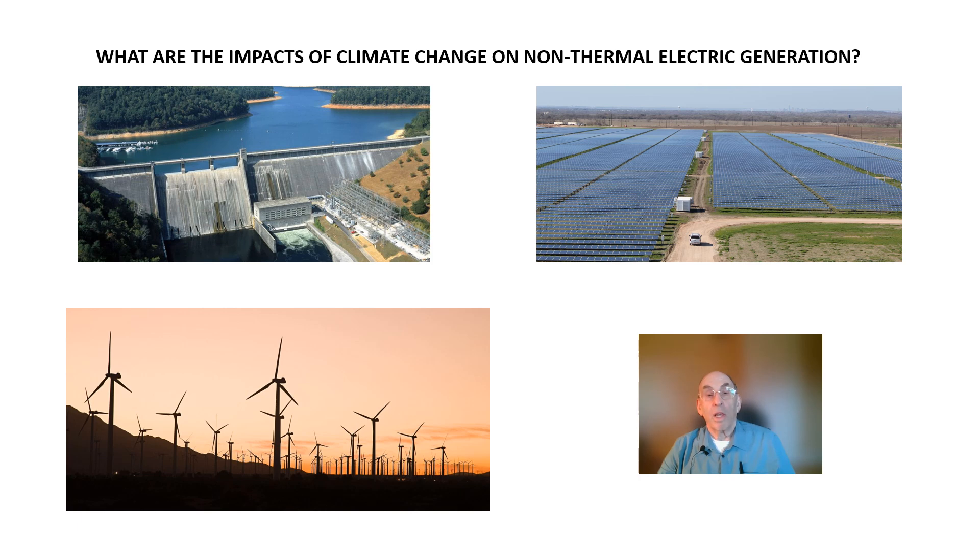Climate change affects the output from photovoltaic solar installations in two ways. First, the solar panels themselves produce less power as the temperature rises. Second, some regions are experiencing more cloud cover as rising temperatures cause more evaporation of water. These factors must be considered in the planning of new utility-scale generation installations. The impact of climate change on wind power is expected to be small, with the main factor being increased thermal losses in the turbine windings.